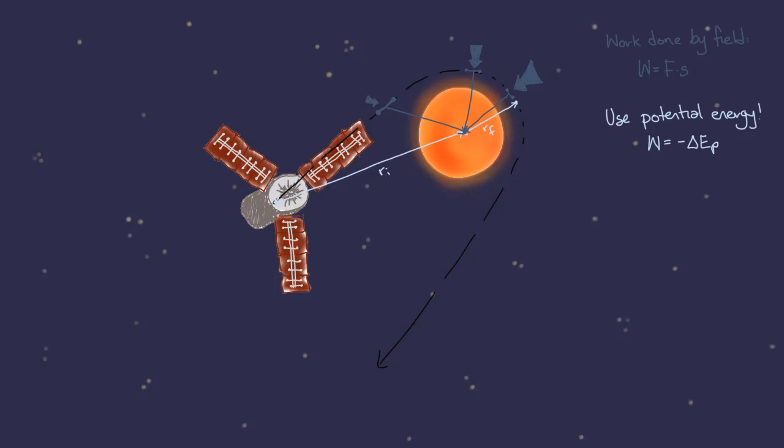As the probe comes into line with the sun, the component of the gravitational force accelerating the probe is reducing. Once the probe has passed the sun, it decelerates. With the velocity, and thus kinetic energy, decreasing, we know that the gravitational potential energy must be increasing.